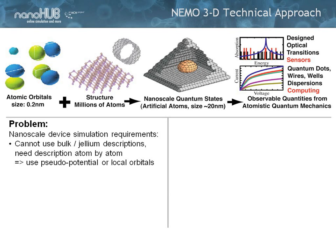The agenda is that we wanted to model quantum dots or structures alike and calculate the eigenstates of the system, and map those into realistic properties that people could measure — like absorption coefficients, like transition lines, like even somewhat IV curves. Although it's truly only an electronic structure code; it does not have transport.